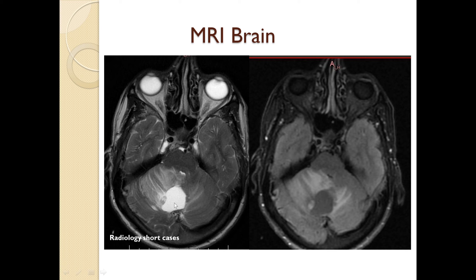These are axial T2-weighted and axial FLAIR images of the brain. We can see there is a well-defined hyper-intense cystic lesion in the right cerebellum and vermis with an iso to hyper-intense mural nodule at the periphery and surrounding vasogenic edema. This edema is causing compression of the brainstem and both ventricles. Similar findings we can appreciate on the FLAIR images. The mural nodule here is hyper-intense and the edema is also extending into the left cerebellum.